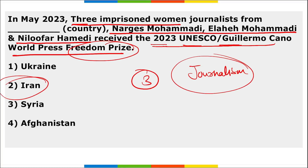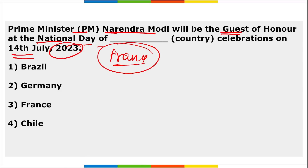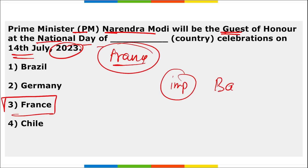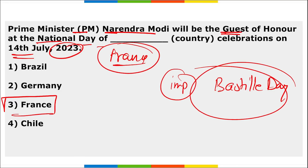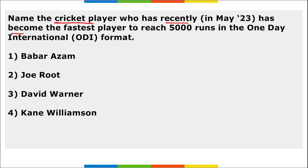Prime Minister Narendra Modi will be the guest of honor at France's National Day celebrations on 14th July 2023. France's National Day is also known as Bastille Day, on which the French celebrate liberty, equality, and fraternity — the three terms also included in India's Preamble.